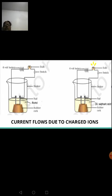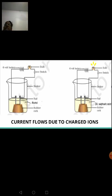Next, alcohol is taken in the beaker. The circuit is complete and the switch is on, but the bulb does not emit light — so alcohol also does not allow electric current to pass through. Then dilute sulfuric acid is tested. The circuit is closed, the switch is on, and the bulb emits light.